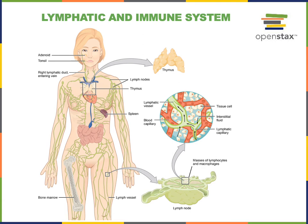The primary lymphoid organs are the location where lymphocytes mature to become immunocompetent — that is, where they become capable of being activated by an antigen. The red bone marrow is the primary lymphoid organ found in the trabecular cavities of spongy bone, and it is where B lymphocytes become immunocompetent. The thymus is the other primary lymphoid organ, located in the superior mediastinum, anterior to the base of the heart, and it is where T lymphocytes become immunocompetent.